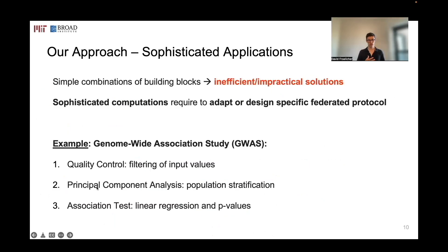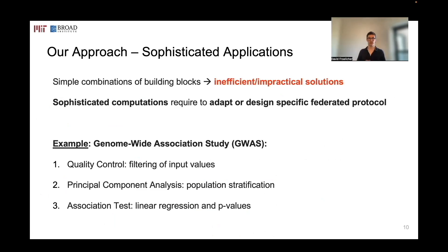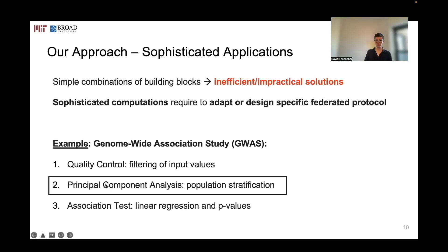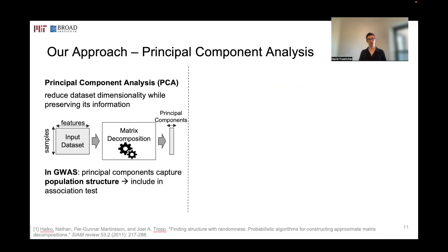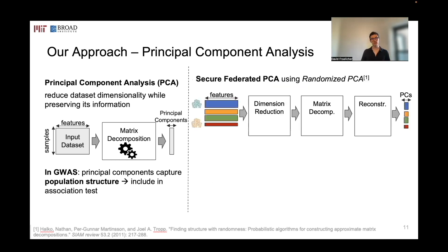We now have an efficient, generic, secure computation framework, but sophisticated protocols still require careful design and adaptation to the federated setting and protection mechanisms. We illustrate this with a genome-wide association study, specifically the second step — principal component analysis — which is the most computationally intensive part. In PCA, the goal is to reduce the dimension of an input dataset by decomposing the matrix into principal components that keep most of the information in the large-scale input matrix. In GWAS, PCA is used to capture population structure and include it in the association test.